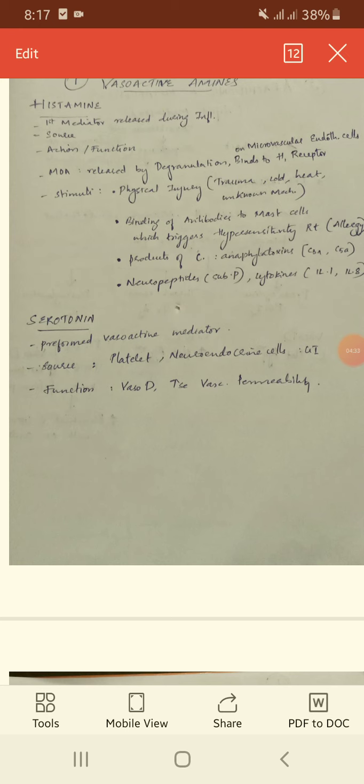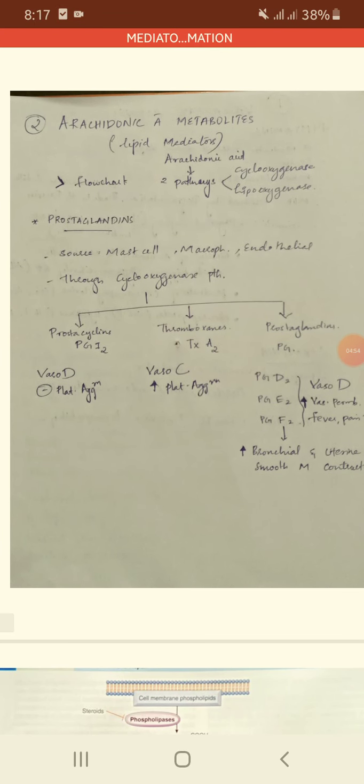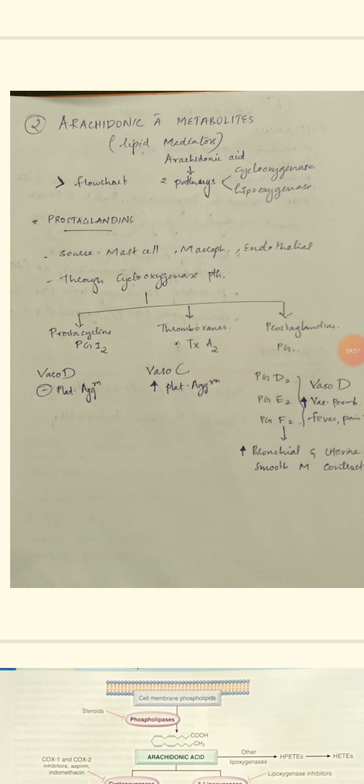Serotonin is a preformed vasoactive mediator. Its main action is vasodilation and increased vascular permeability. It is present in platelets and neuroendocrine cells in the GIT.